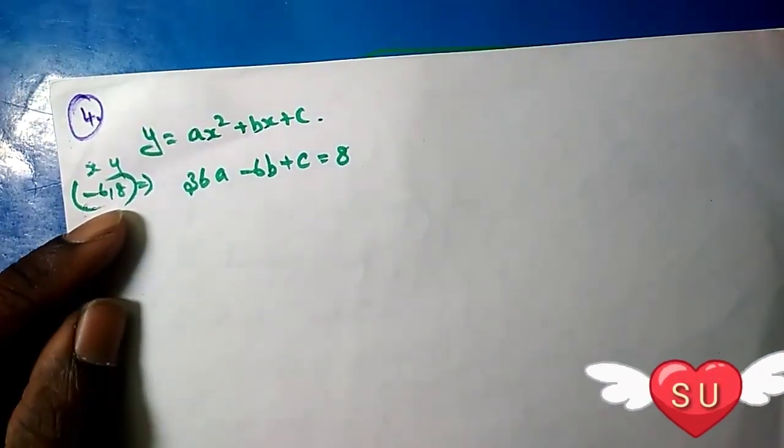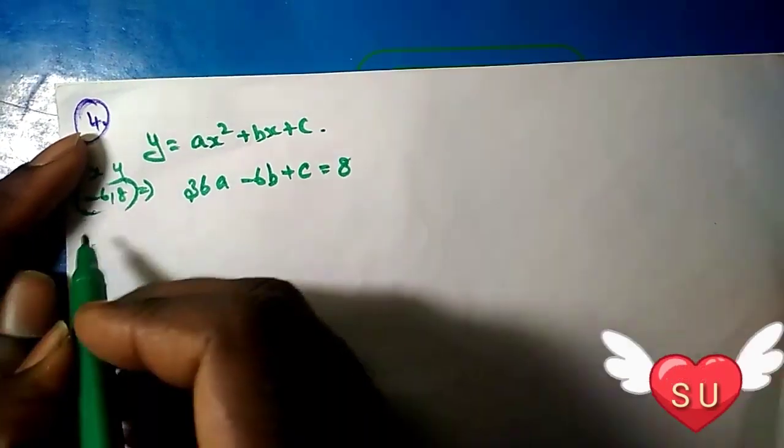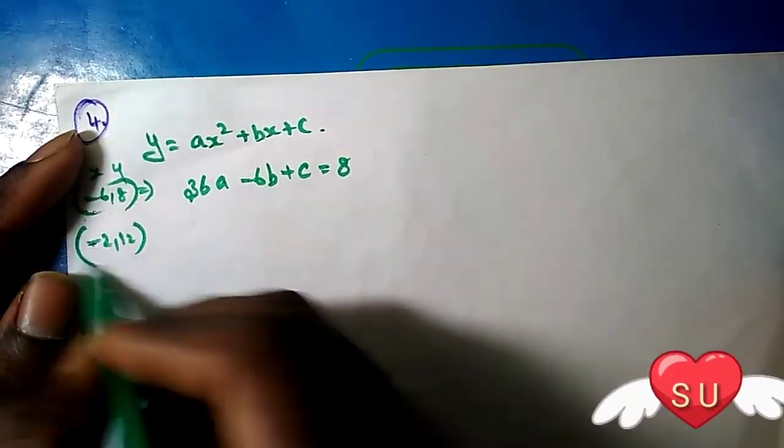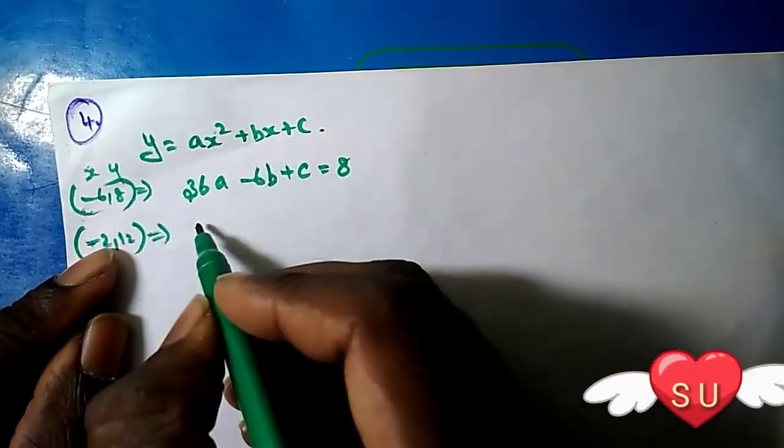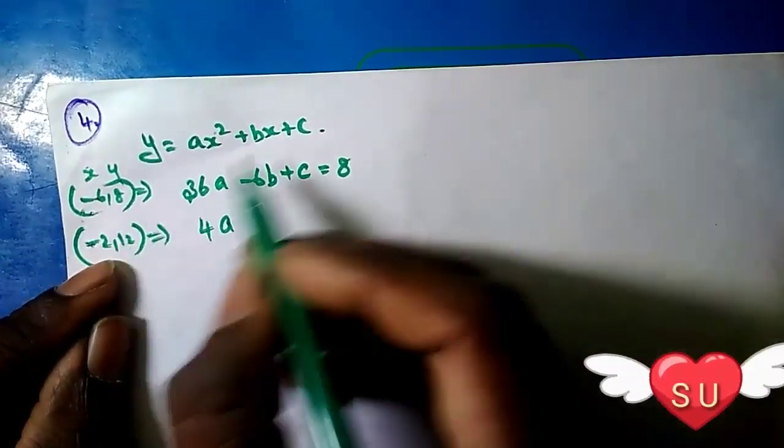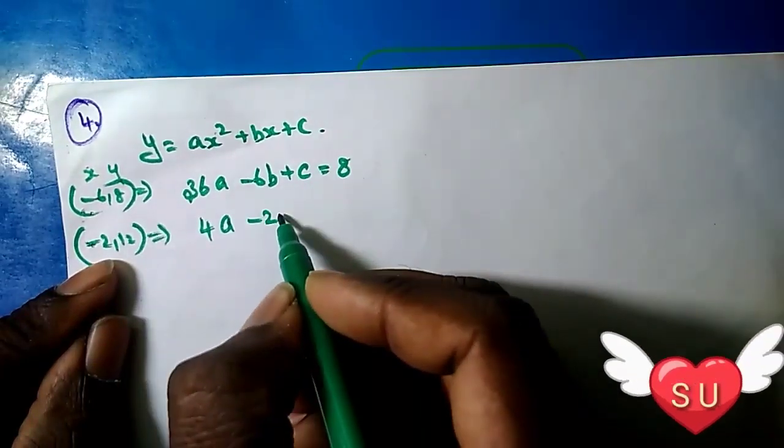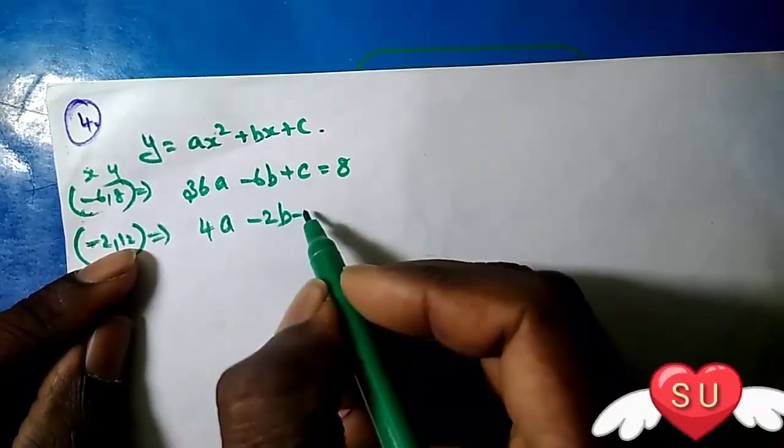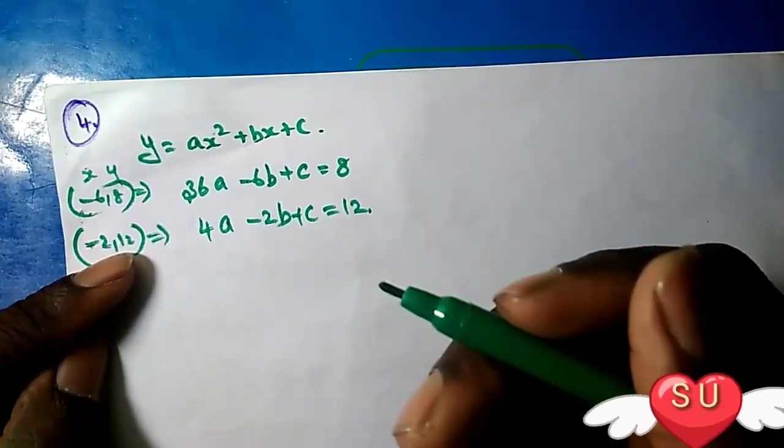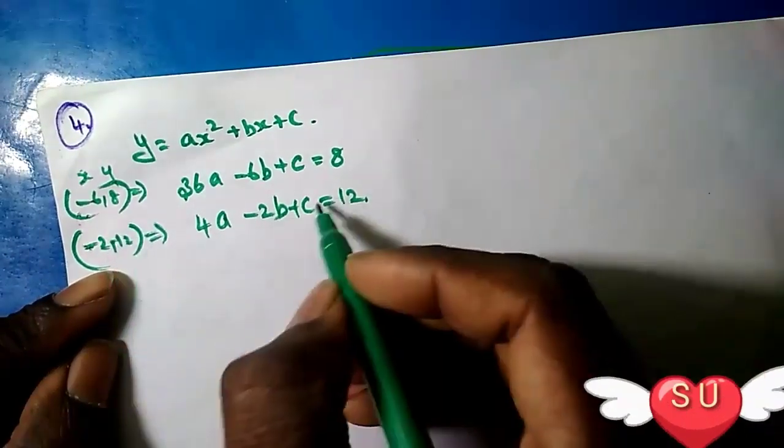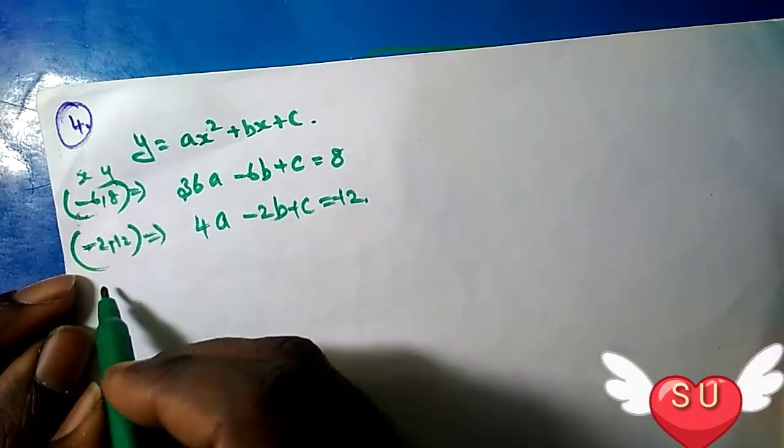The next equation comes from the next point (-2, 2). Substituting x = -2: (-2)² = 4a, -2B plus C equals 2. So we get 4a - 2b + c = 2. This is the second equation.